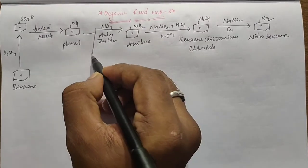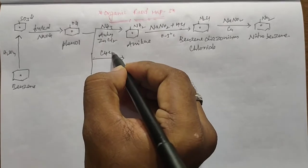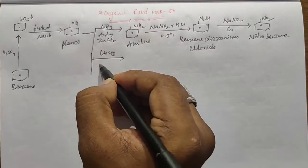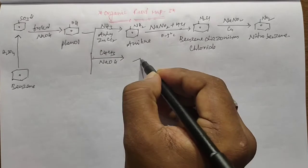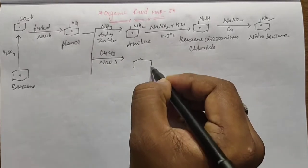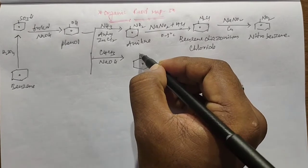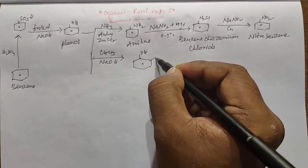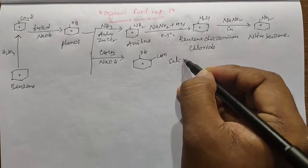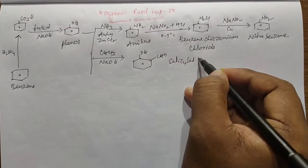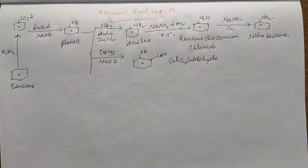When Phenol reacts with Chloroform in presence of Sodium Hydroxide — a strong alkali like NaOH or KOH — it can form Salicylaldehyde. This is called the Reimer-Tiemann reaction.